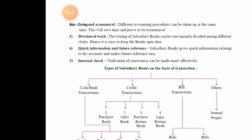Next is division of work. When we maintain subsidiary books, there will be different clerks writing each subsidiary book, making it easy to keep the books up to date. Next is quick information and future reference. Subsidiary books give you quick information relating to a particular type of transaction — for example, how much purchases have been done, or if it is sales, you can immediately know how much sales has been done.